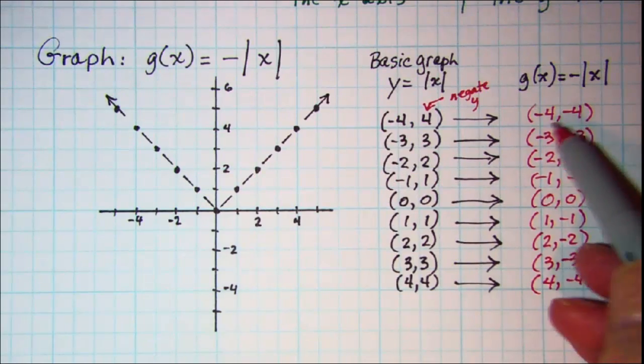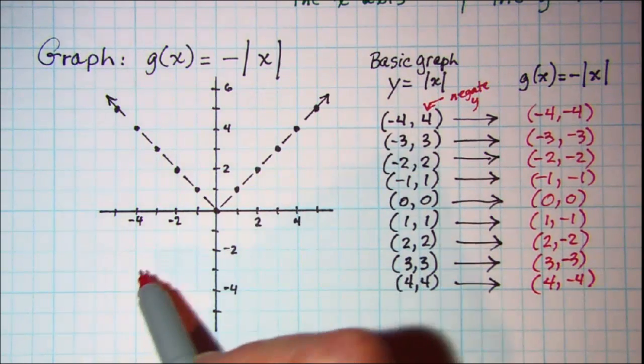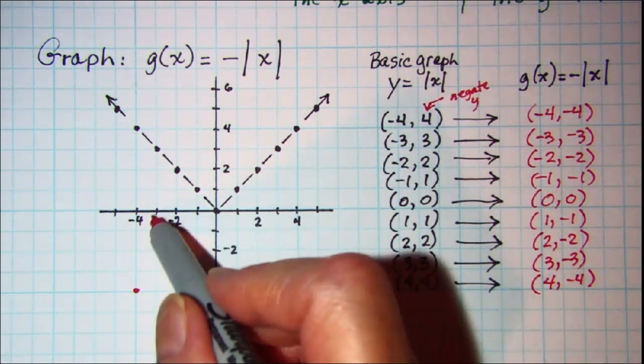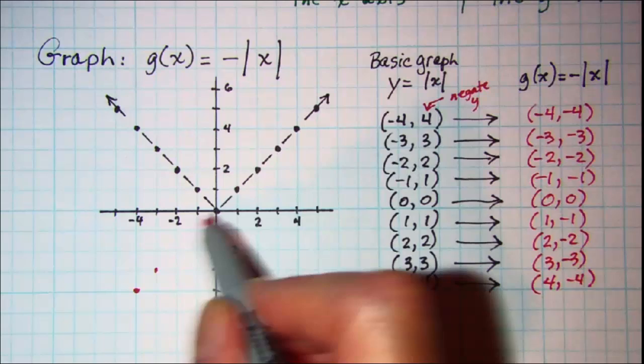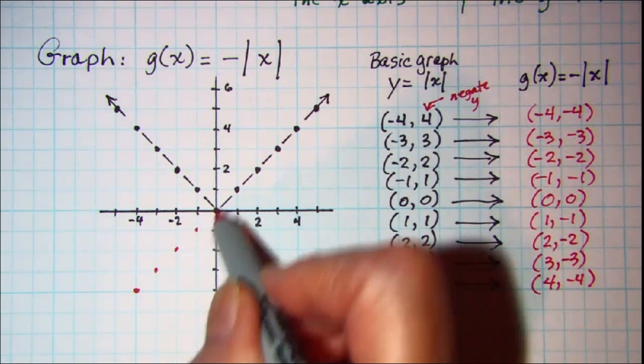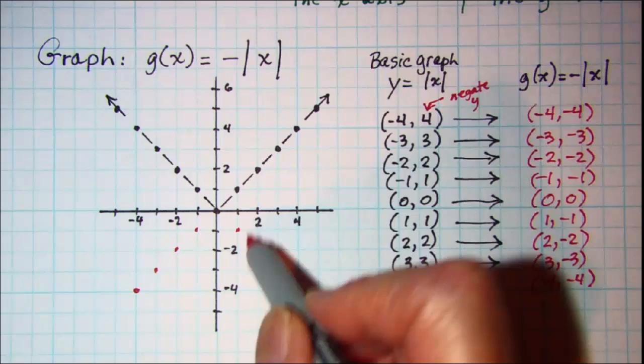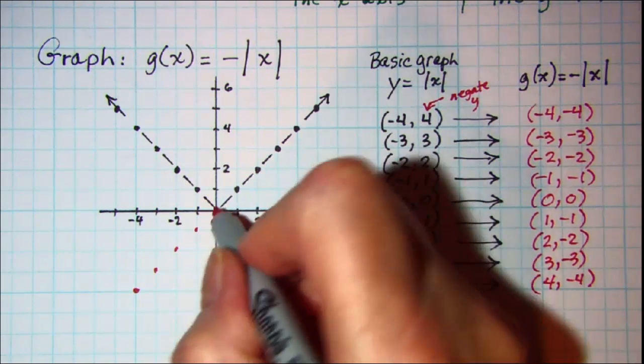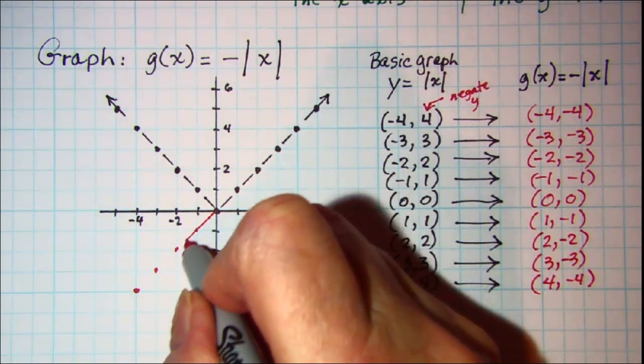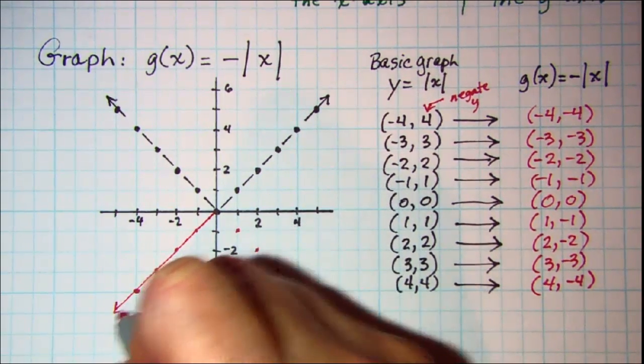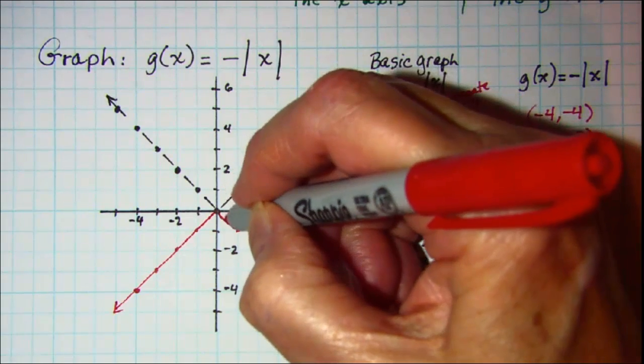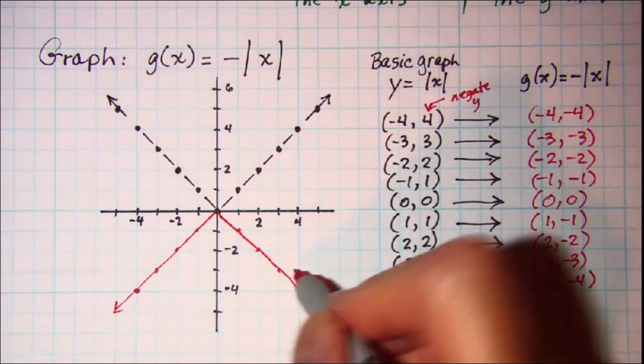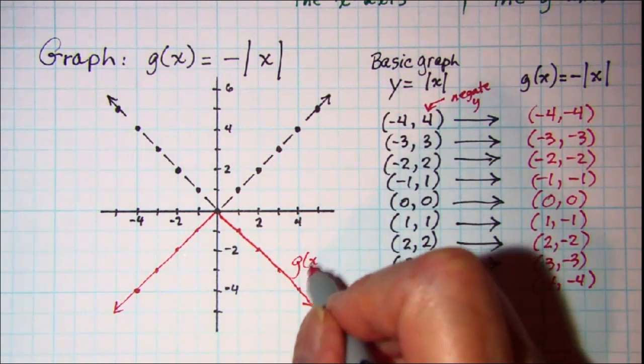Now when we plot these we have negative 4, negative 4, negative 3, negative 3, negative 2, negative 2. So our g of x graph is shown here in red.